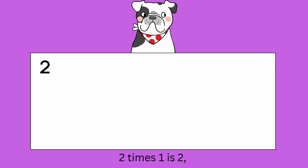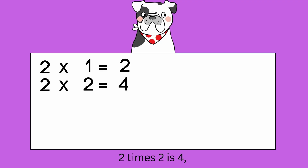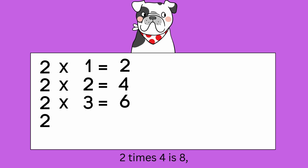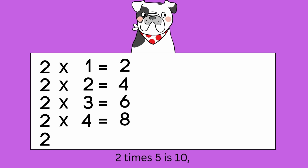Two times one is two. Two times two is four. Two times three is six. Two times four is eight. Two times five is ten.